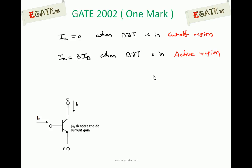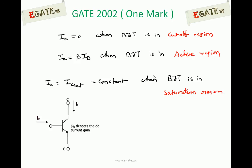Once the transistor is saturated, even if you increase the base current, the collector current cannot increase — it has been saturated. IC becomes IC saturation, which is constant when the BJT is in the saturation region. The relation IC equals beta times IB holds good only until beta times IB equals IC saturation. That value of base current is the minimum base current required to keep the transistor in saturation, so IC saturation equals beta times IB minimum.